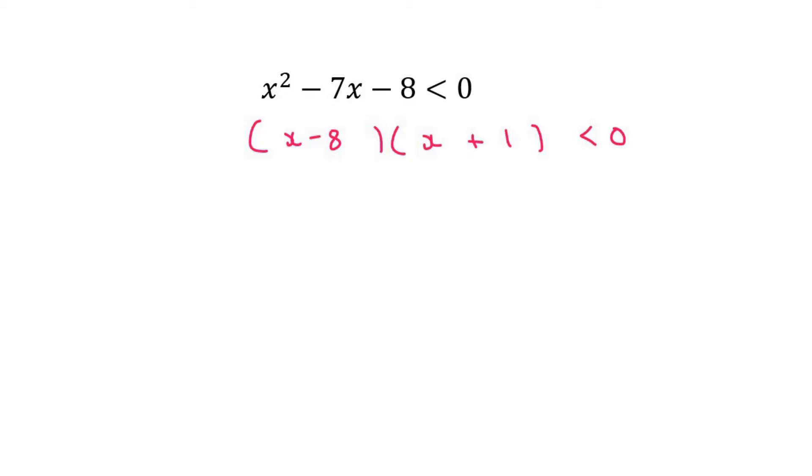Now a huge mistake, or the biggest area where students make mistakes: if you've done this, it's okay, just remember this is wrong. You don't want to say x - 8 < 0 or x + 1 < 0. That is not correct. I used to do the same back in high school, so I understand that's tempting, but that's not the way it works.